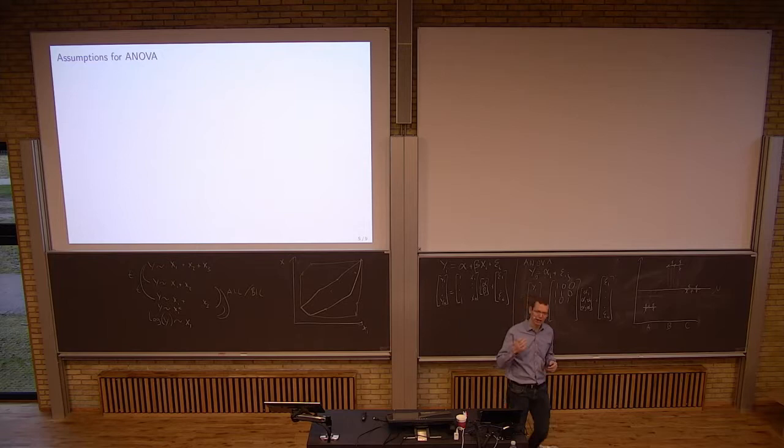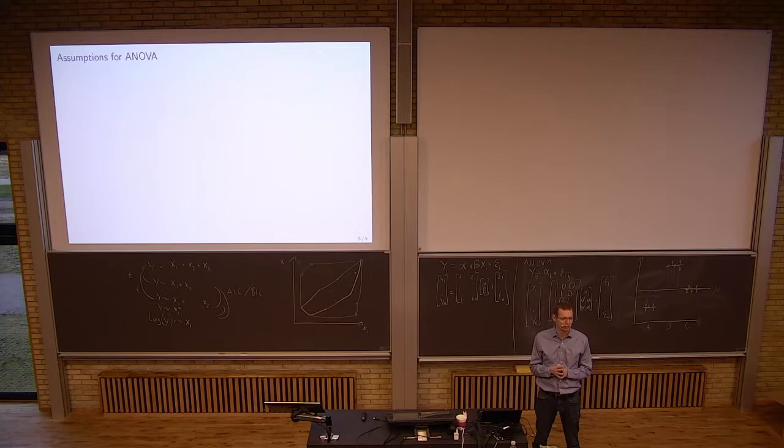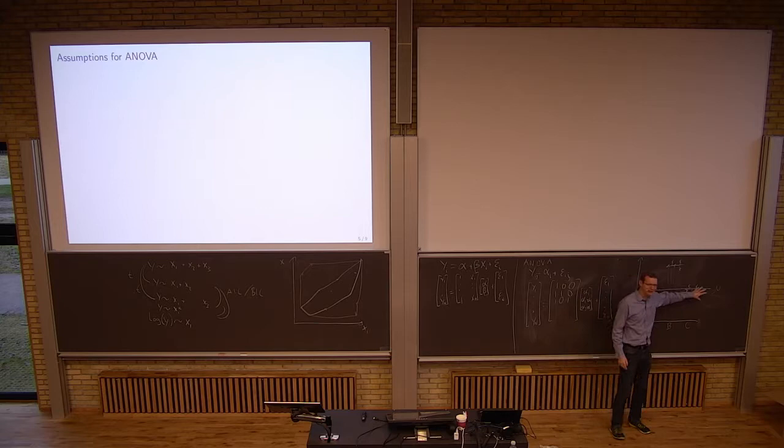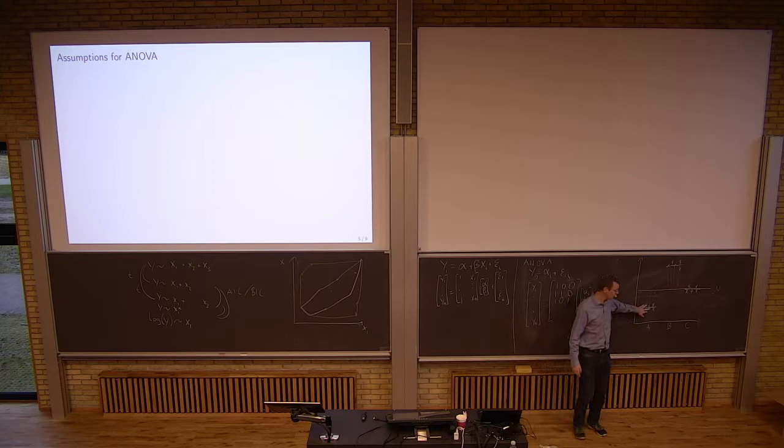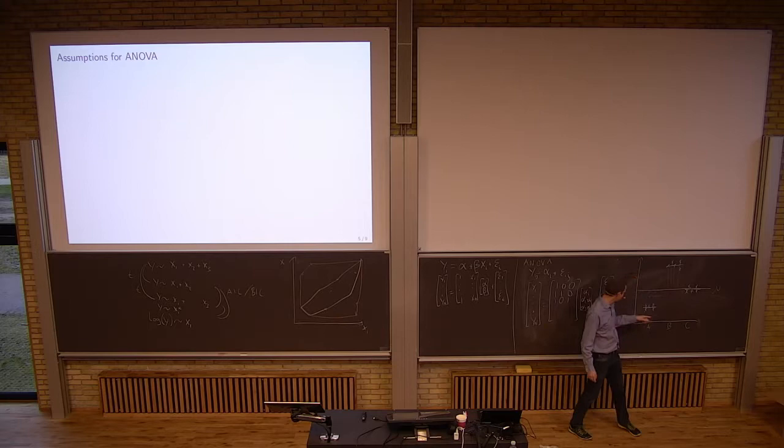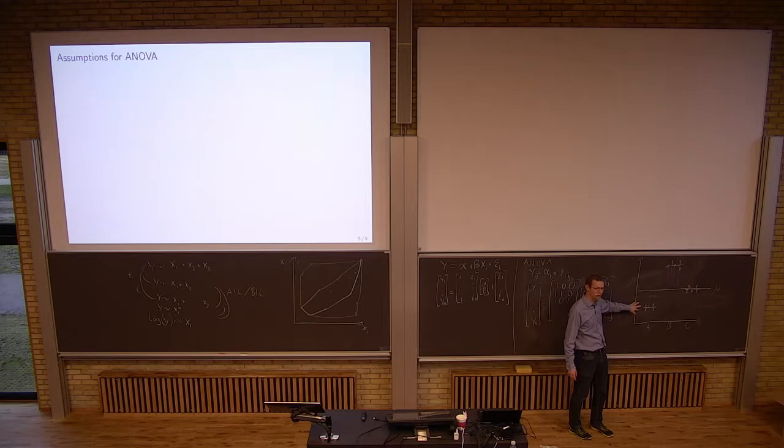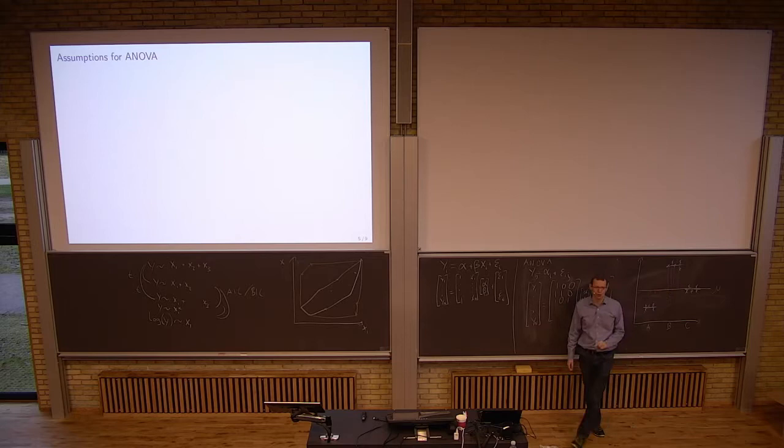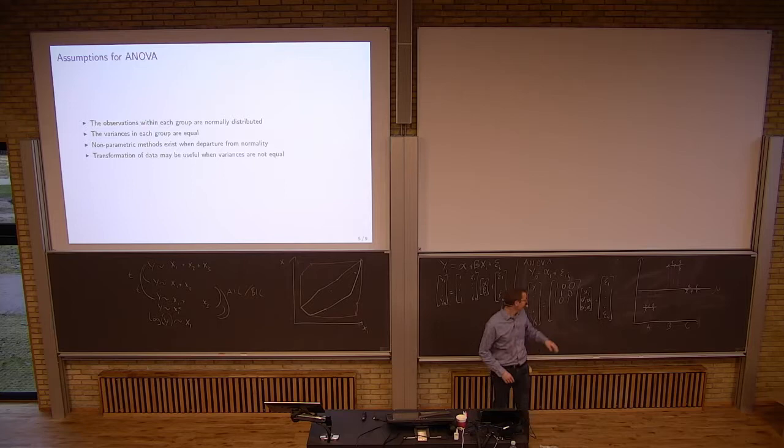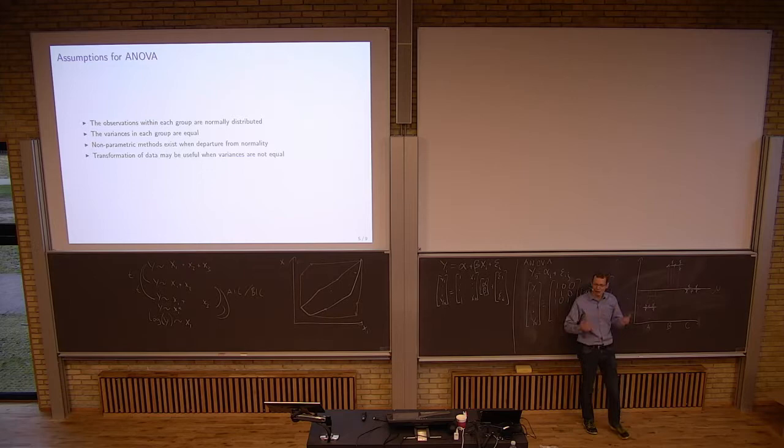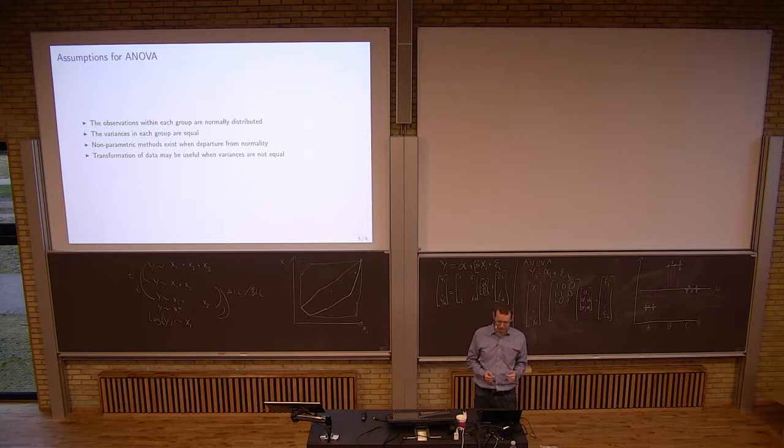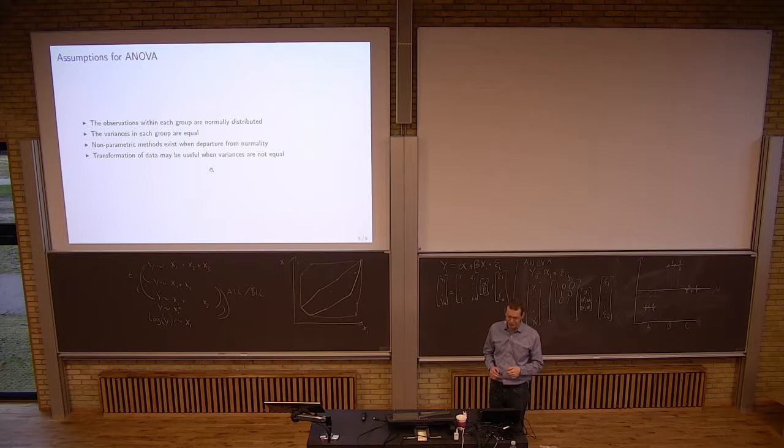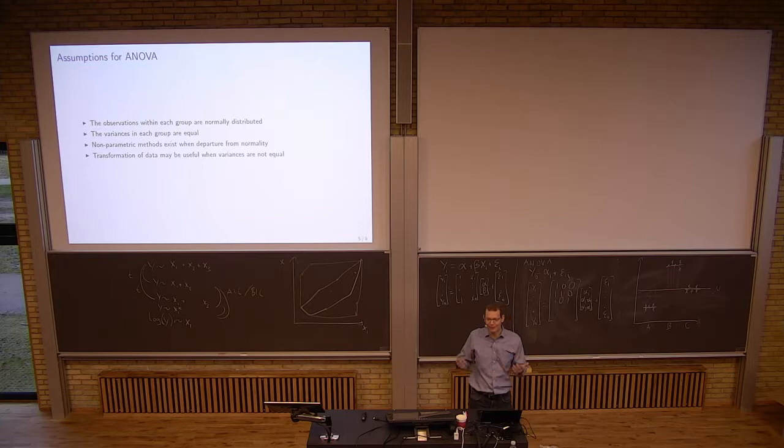All the rest is pretty much like linear regression. So what are the assumptions to be fulfilled when we do analysis of variance? Linearity is not quite the same here. It's not needed. But normality of the residuals, yes. So within each group, they should be normally distributed. But when you look at the joint distribution of all the responses, they should not be normally distributed. Because what you have, you have a group down here, you have a group there, you have a group there. But the residuals should be normally distributed. And you should also have the same variance in each group. And you have nonparametric methods if you depart from normality. And again, you can transform data if needed.